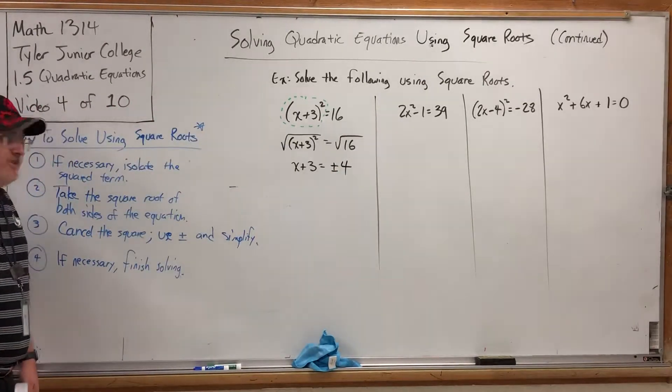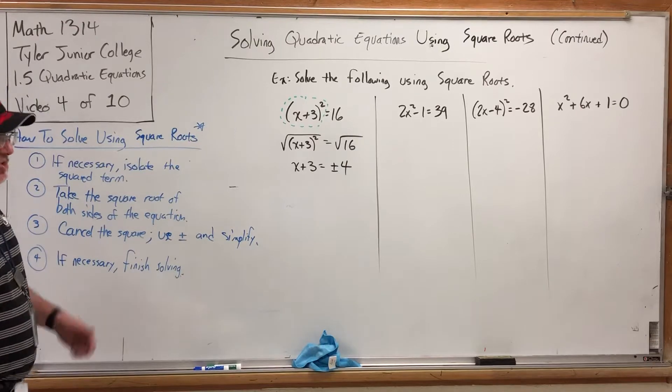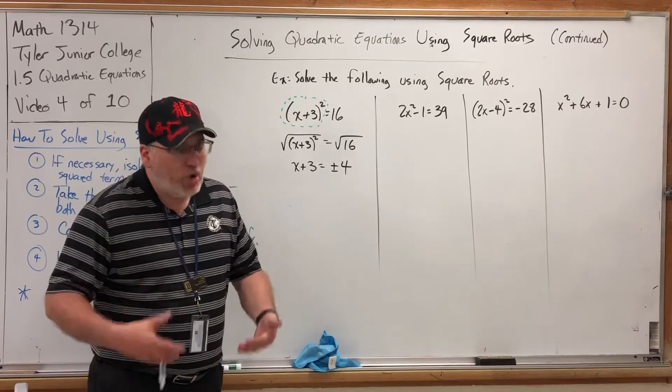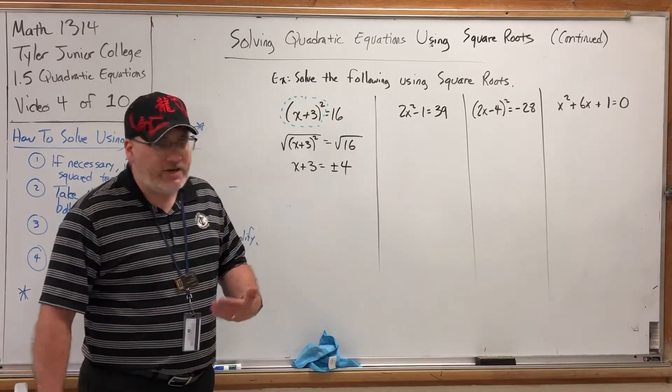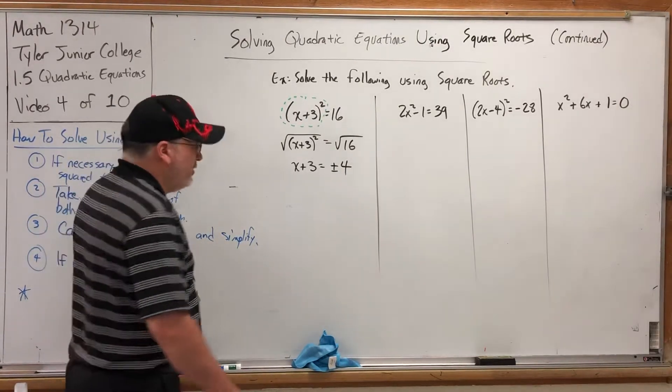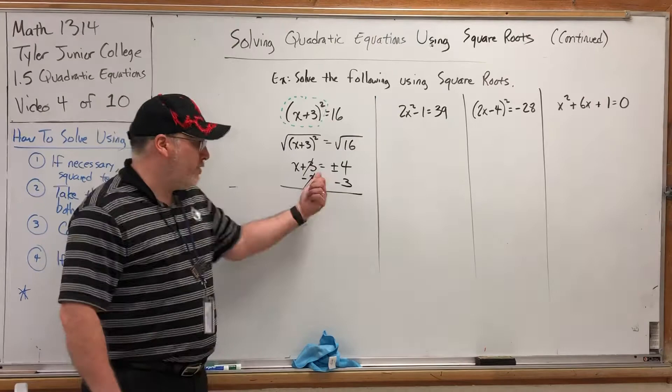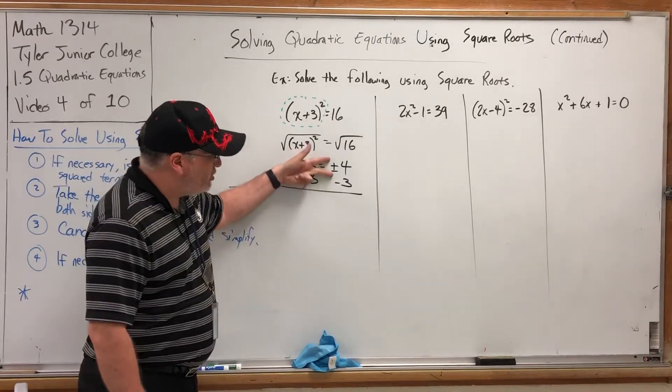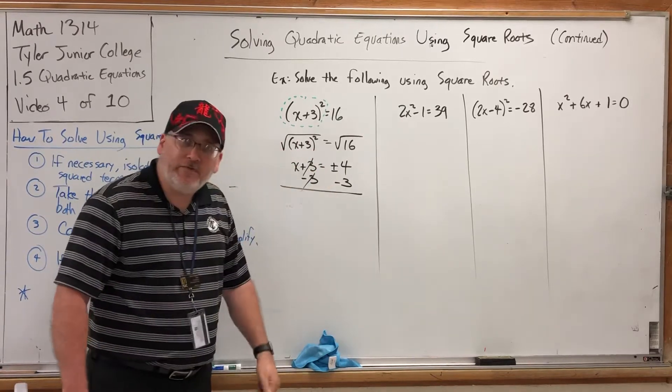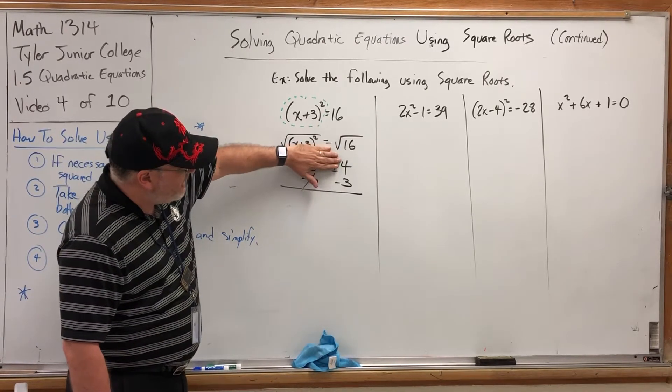But we're not done because that doesn't say x equals. Hence, we need to do the fourth step, which is, if necessary, finish solving. What you can always do next is whatever move is necessary to get the job done, which in this case is to subtract 3 from both sides. But here's the problem with subtracting 3 from a plus-minus number. This is two different numbers. Hence, this is two different subtraction problems. Hence, it should have two different answers.